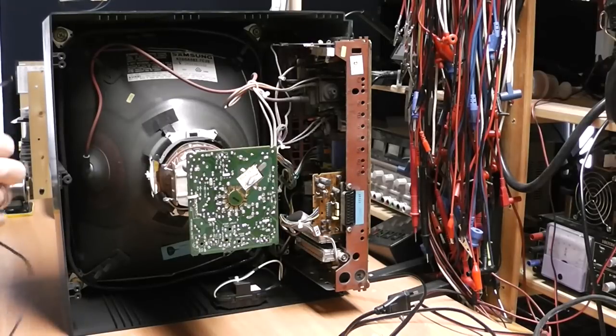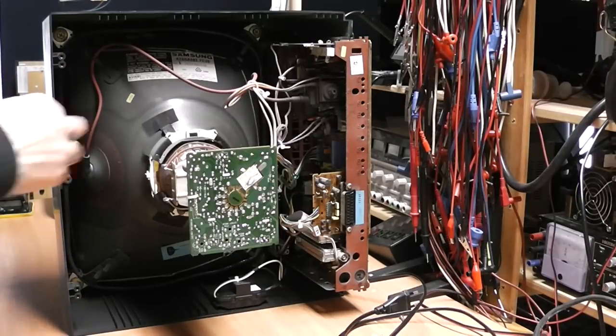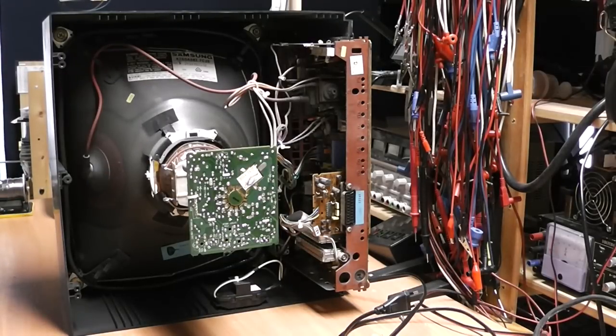Before we do anything else we will discharge the CRT. The CRT can be viewed as a high voltage capacitor which can store a considerable charge. We are going to get rid of that first.